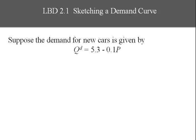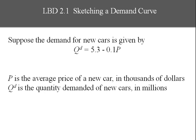Sketching a demand curve. Suppose the demand for new cars is given by Q^d equals 5.3 minus 0.1P. P is the average price of a new car in thousands of dollars, and Q^d is the quantity demanded of new cars in millions.